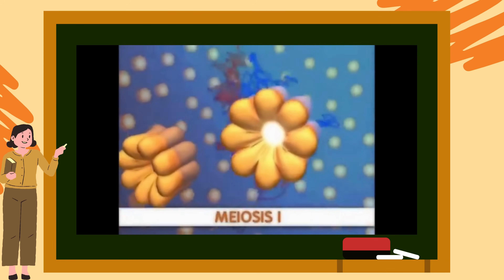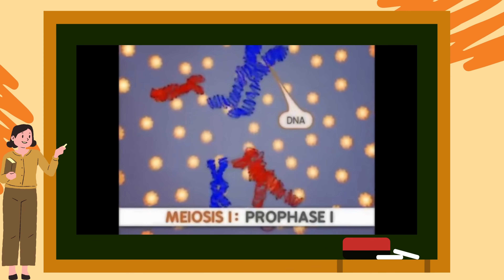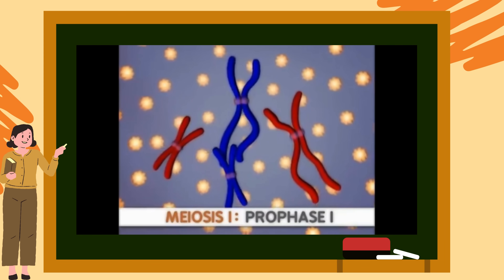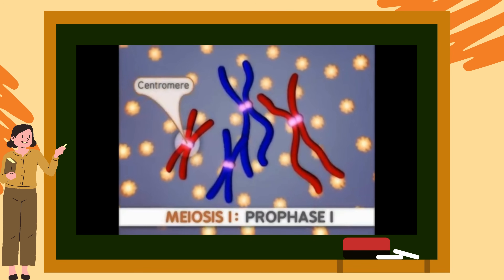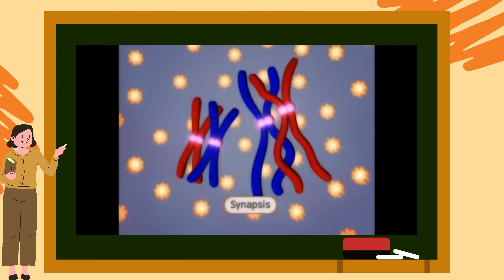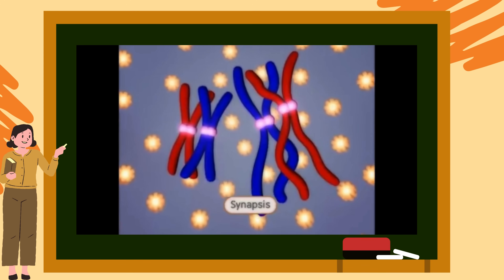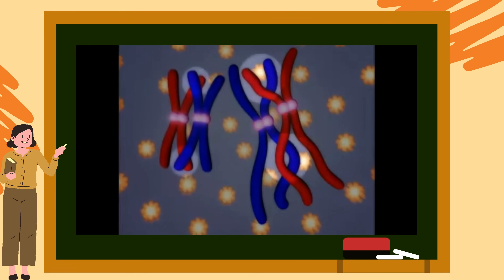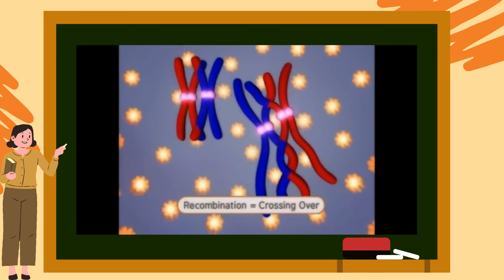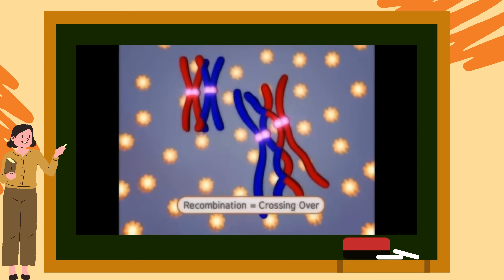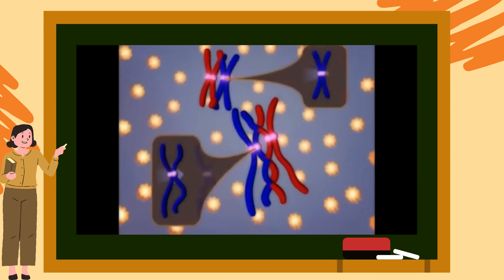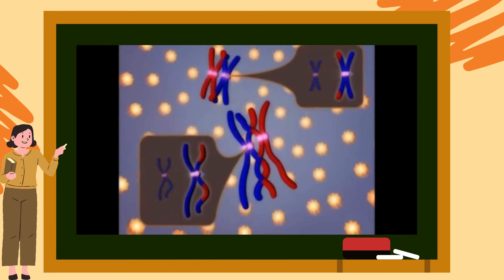Meiosis begins with prophase I. In this stage, the DNA condenses to form chromosomes. The duplicated sister chromatids join together at the centromere and stay fused throughout meiosis I. Next, each pair of homologous chromosomes undergoes synapsis to form a complex involving two pairs of sister chromatids. Chromosomal material is exchanged between the two pairs — this event is called recombination, or more commonly crossing over. After crossing over, the sister chromatids for each chromosome are no longer identical, which is one reason why no two siblings are genetically identical.